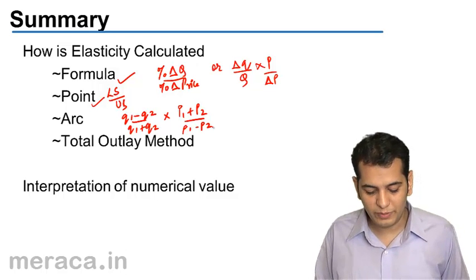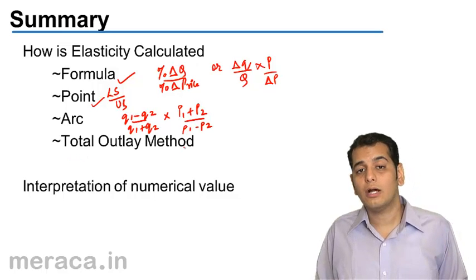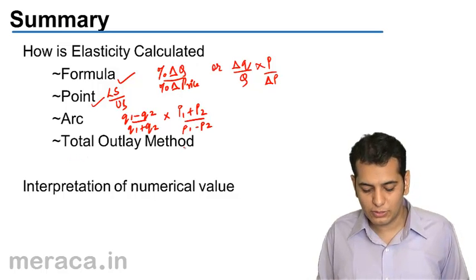So this is how we calculate arc elasticity, and finally we did total outlay method. In total outlay method, we measure the change in expenditure because outlay means expenditure.